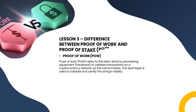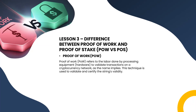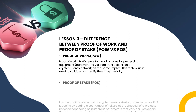Lesson three: Difference between Proof of Work (PoW) and Proof of Stake (PoS). Proof of Work refers to the labor done by processing equipment and hardware to validate transactions on a cryptocurrency network, as the name implies. This technique is used to validate and certify the chain's validity.